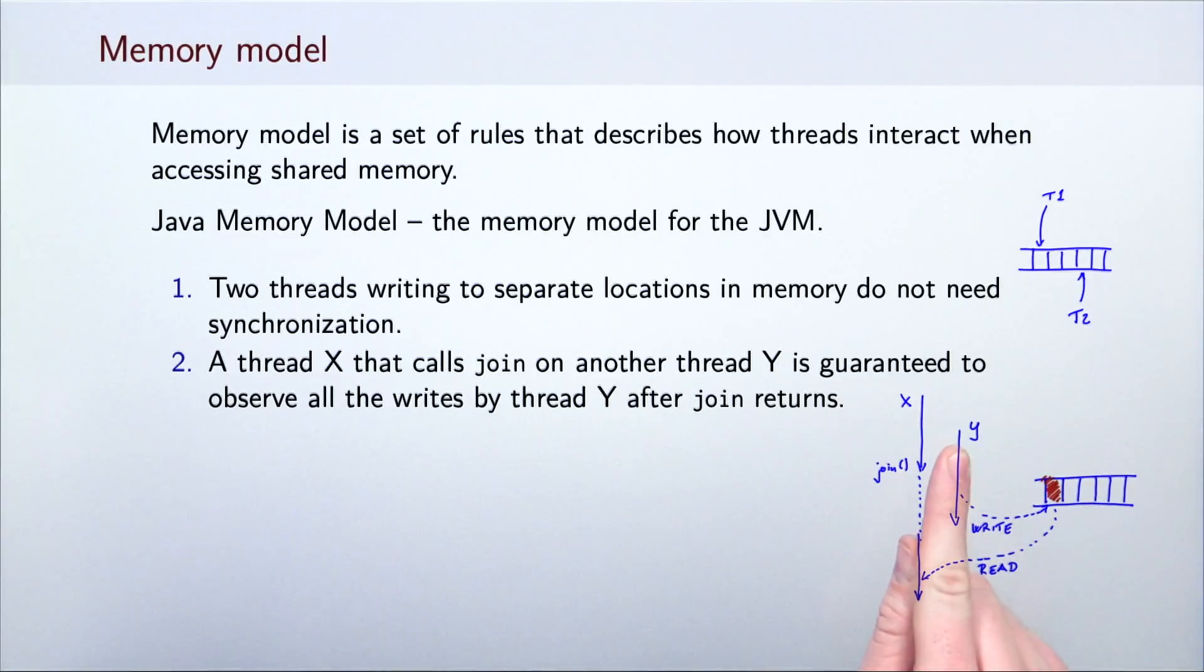So for example, if thread Y writes to this memory location and thread X calls join on the thread Y, then when join returns, thread X will see all the writes by thread Y. Without calling join, there is no guarantee that the thread X will actually see this write by the time it does the read.